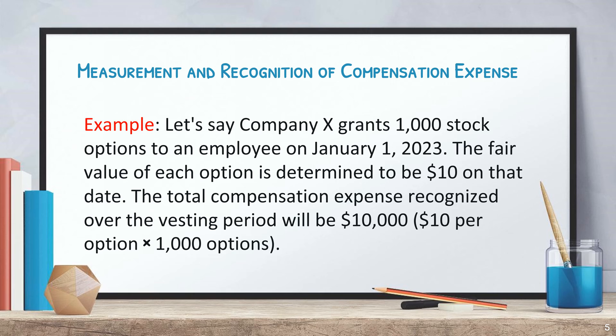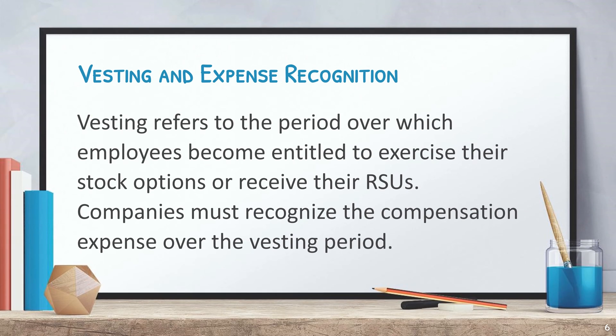$10 per option times 1,000 options. Vesting refers to the period over which employees become entitled to exercise their stock options or receive their RSUs. Companies must recognize the compensation expense over the vesting period.